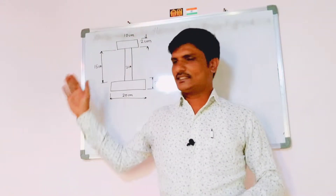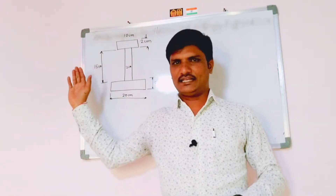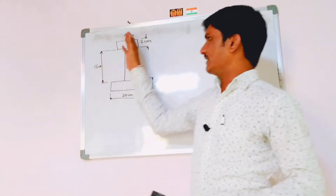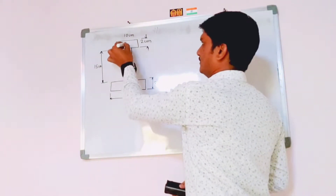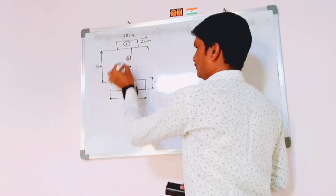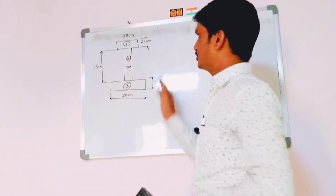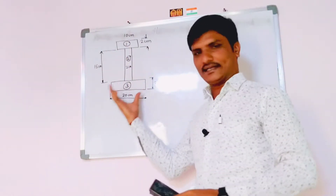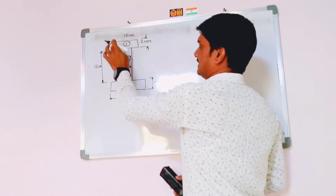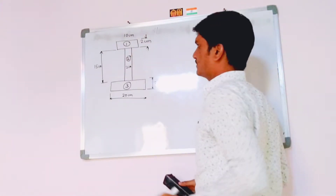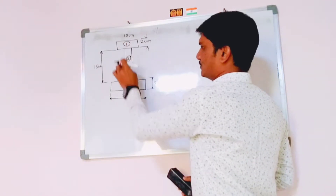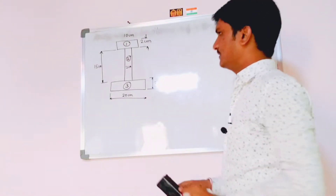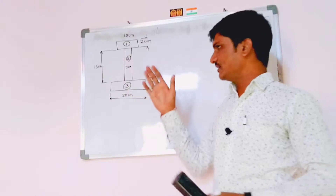We are finding the center of gravity for an I-section. This is one of the basic problems on center of gravity. There are three sections numbered one, two, and three, each being a rectangular shape. Section 1 has dimensions 10 by 2 centimeters, section 2 is 2 by 15 centimeters, and section 3 is 20 by 2 centimeters.